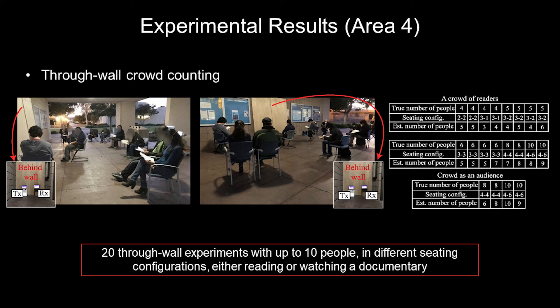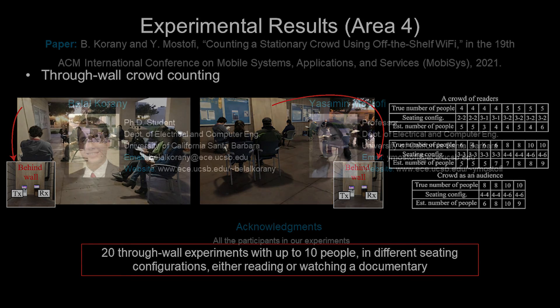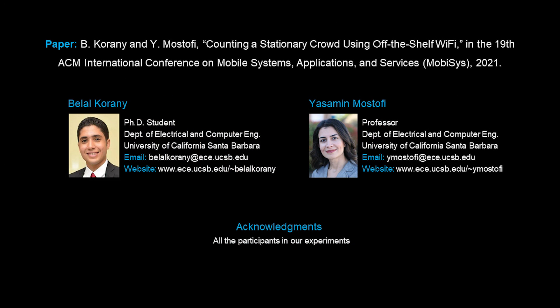We ran 20 experiments where up to and including 10 people seated in different configurations were engaged in either reading or watching a documentary. In this setting, we get a counting error of zero or only one person in 18 out of the 20 experiments, showing a very good counting performance even in through-wall scenarios. See the paper for more details and results.